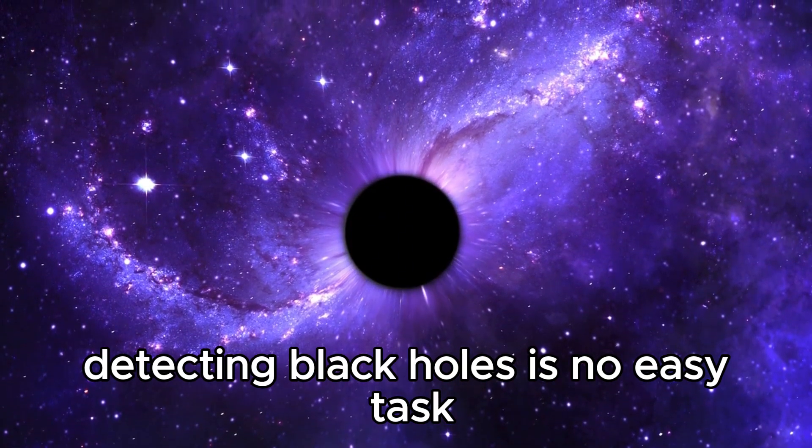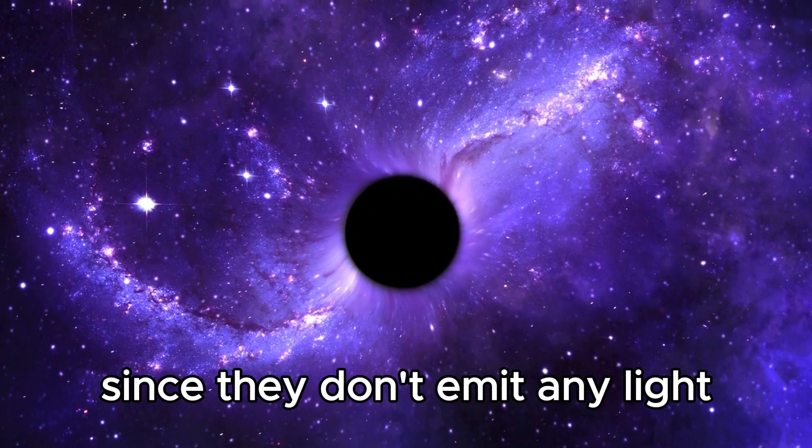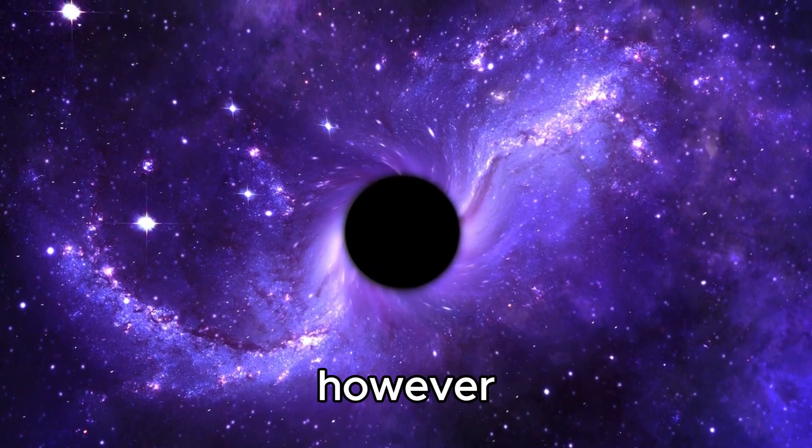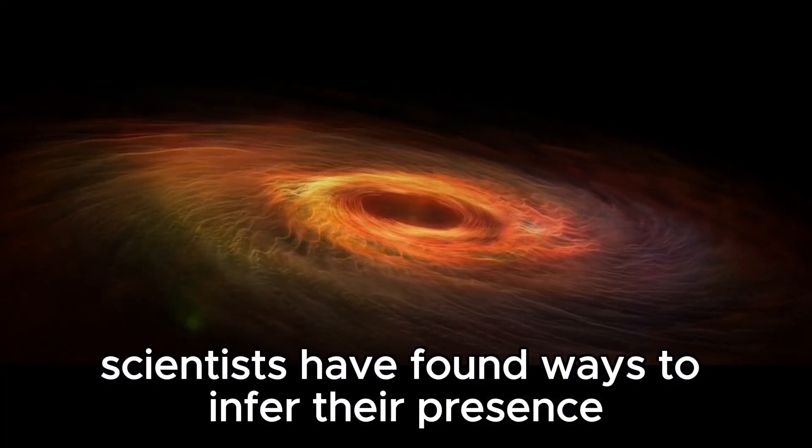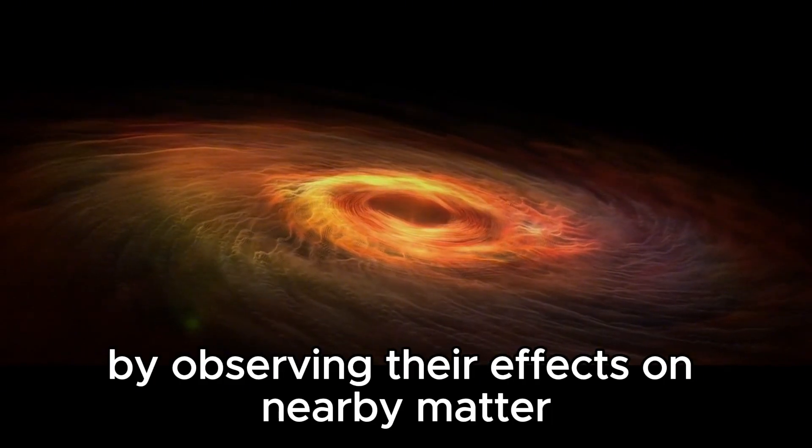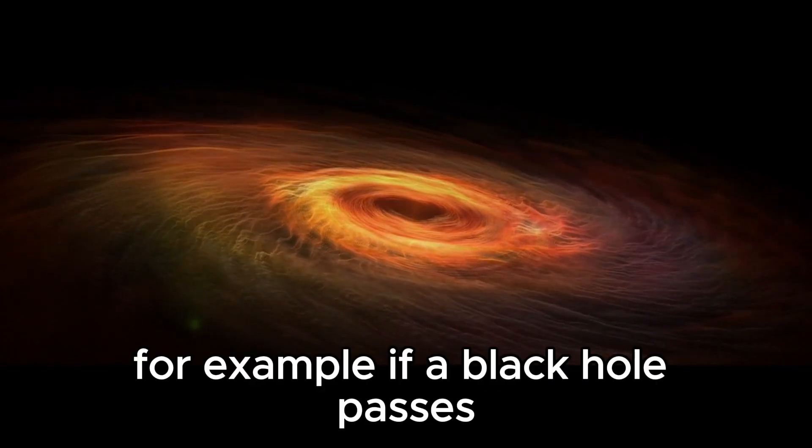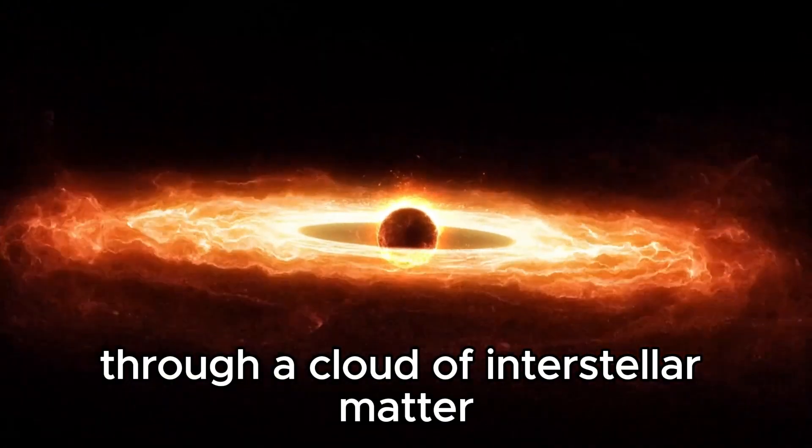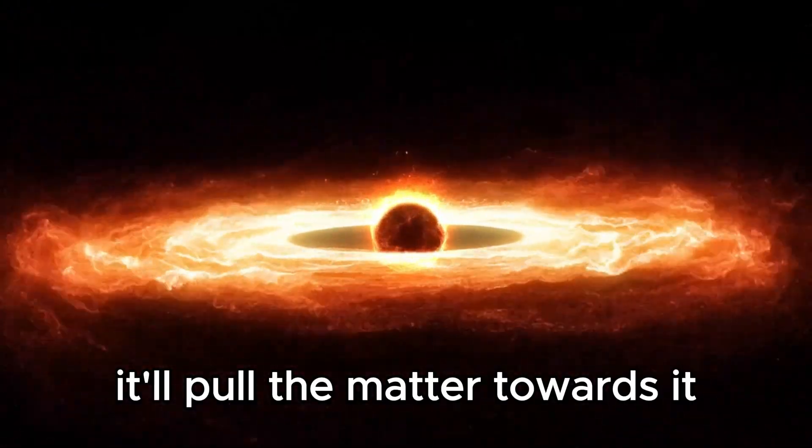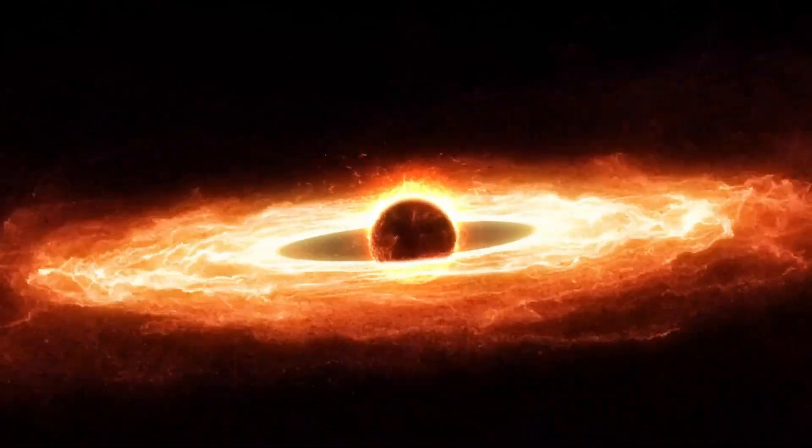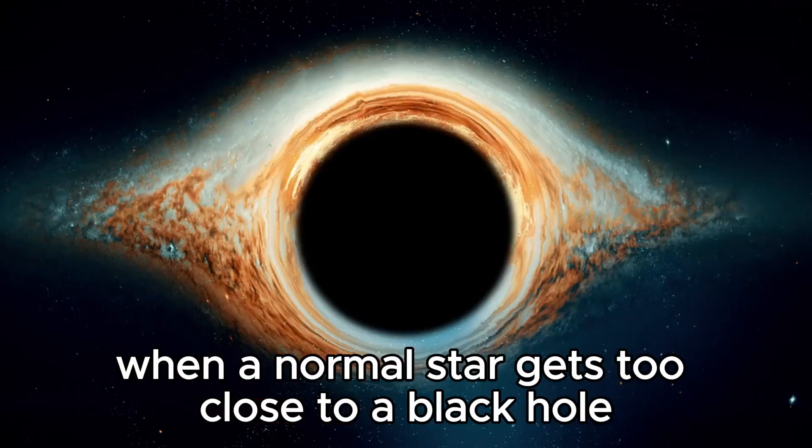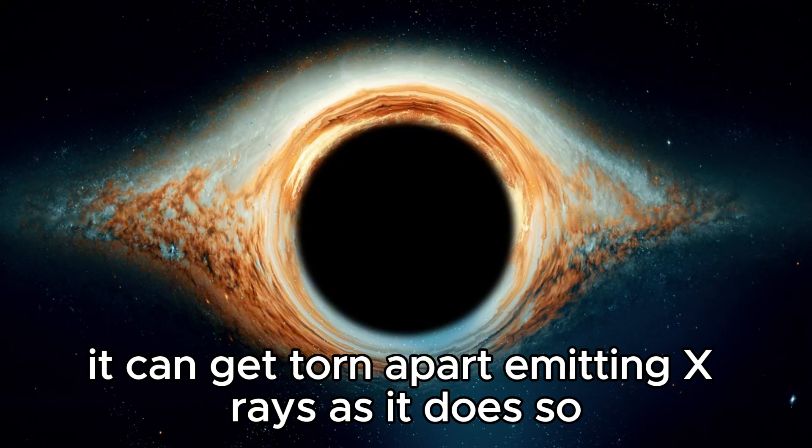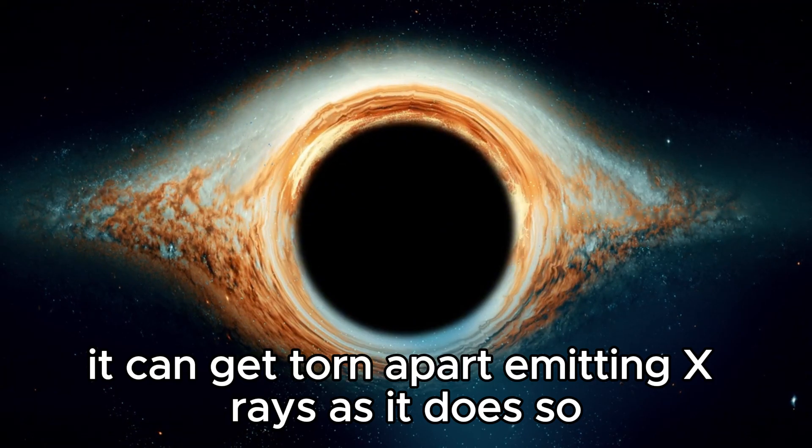Detecting black holes is no easy task since they don't emit any light. However, scientists have found ways to infer their presence by observing their effects on nearby matter. For example, if a black hole passes through a cloud of interstellar matter, it'll pull the matter towards it in a process called accretion. Additionally, when a normal star gets too close to a black hole, it can get torn apart, emitting X-rays as it does so.